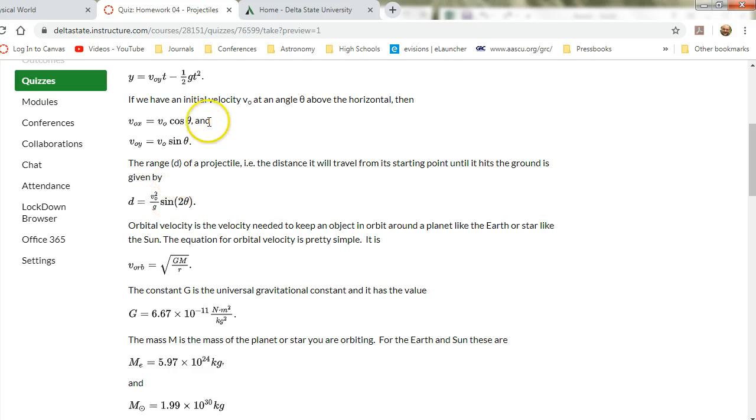All right, so when you have initial velocity V naught at an angle theta, then you can express the X component as V naught cosine theta, and the Y component as V naught sine theta.